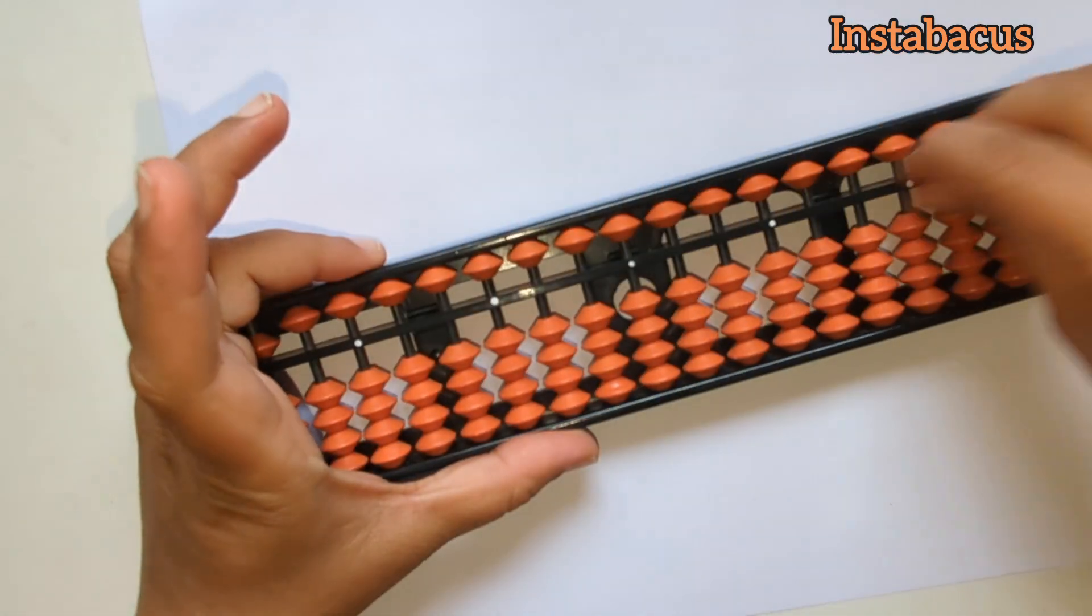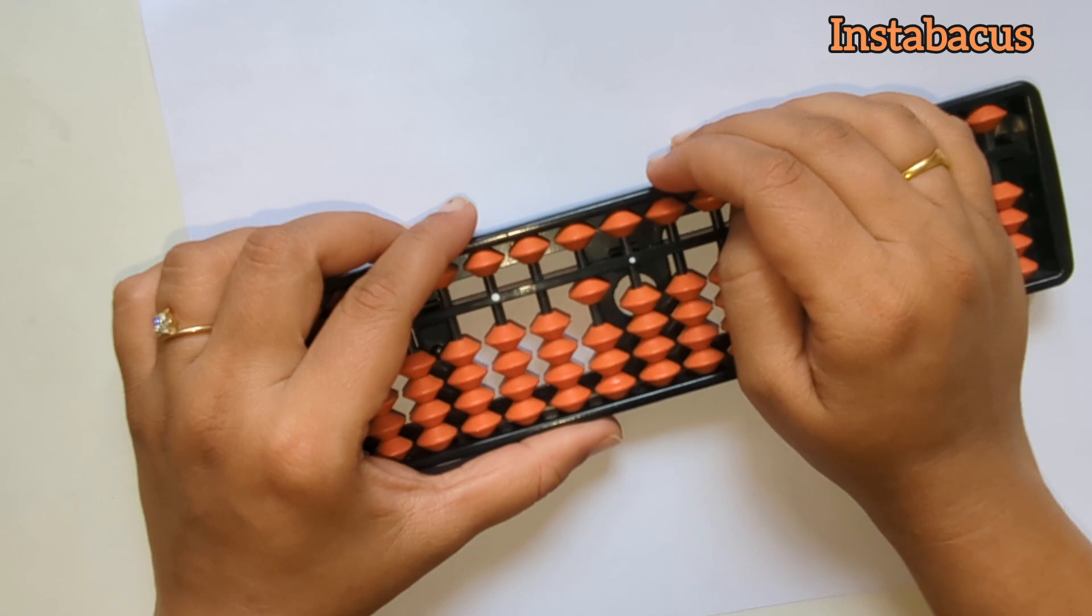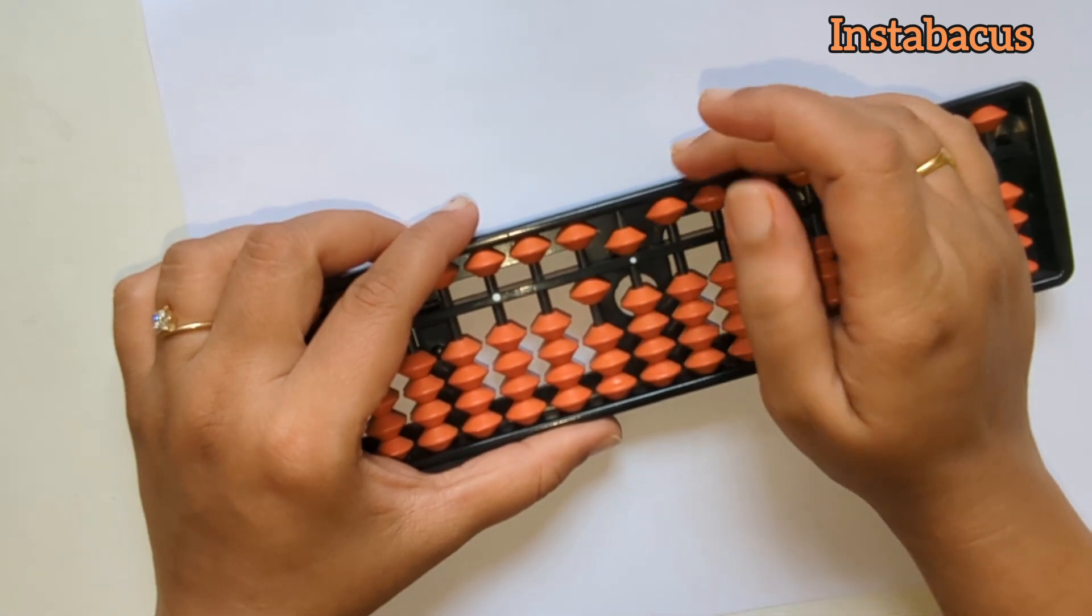Now again, to add five to ten. This is ten on our abacus, and to add five it is again easy. Ten plus five, that is fifteen.